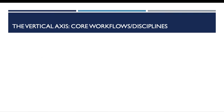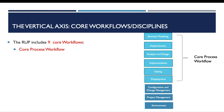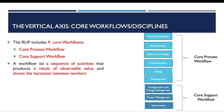For the vertical axis, it includes nine core workflows which are split into core process workflows and core support workflows. A workflow is a sequence of activities that produces an observable result and shows the interaction between workers. For the core process workflows, I will not go into detail because they are common activities used in most software engineering methods. If you want to design any workflow you can use the sequence diagram of the UML language.